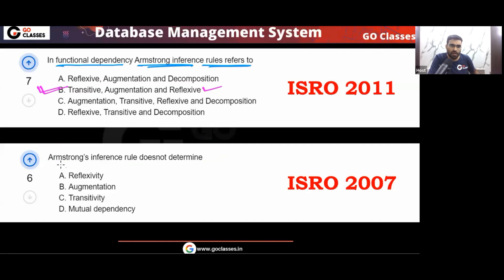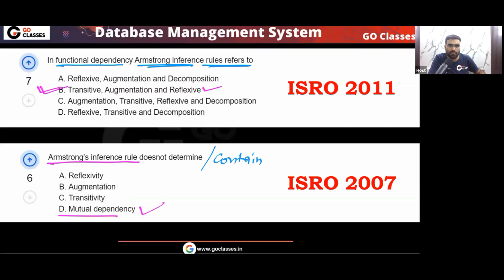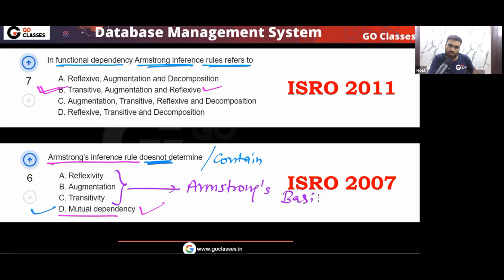For the ISRO 2007 question, it asks which rule Armstrong's inference rules do not contain. Since Armstrong's rules are reflexivity, augmentation, and transitivity, they do not contain mutual dependency. So the answer for that question is option D.